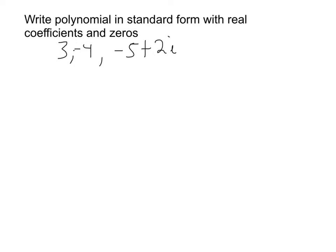Write the polynomial in standard form with real coefficients and zeros of 3, negative 4, and negative 5 plus 2i.